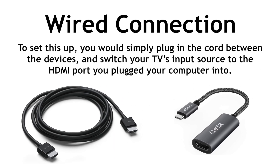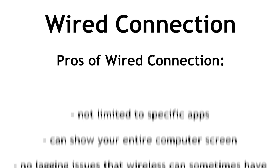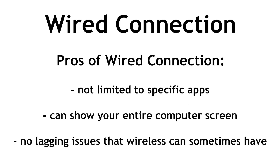To set this up, you would simply plug in the cord between the devices and switch your TV's input source to the HDMI port you plugged your computer into. The upside of using the wired method is you aren't limited to specific apps and can show your entire computer screen and any media you want projected on your TV, and you won't have to deal with any potential lagging issues that a wireless connection can sometimes have.